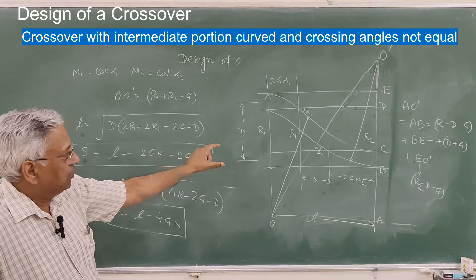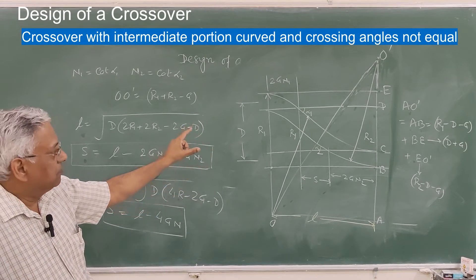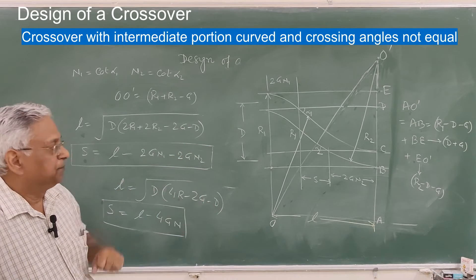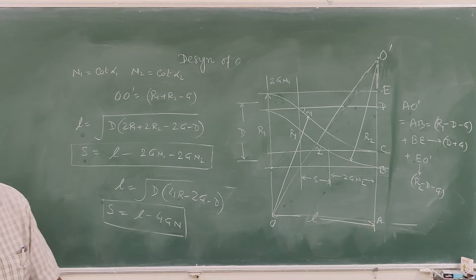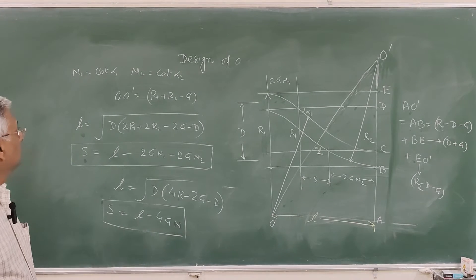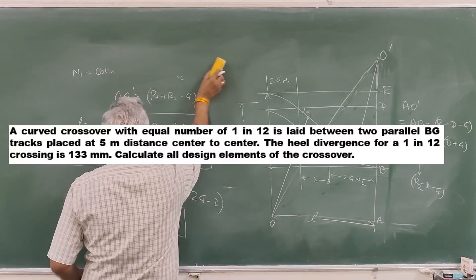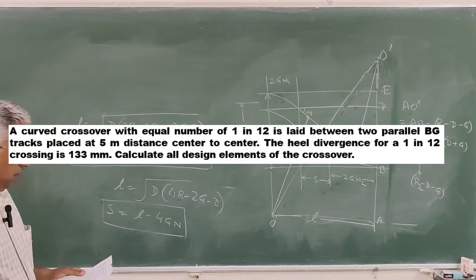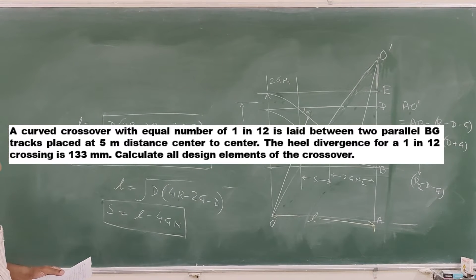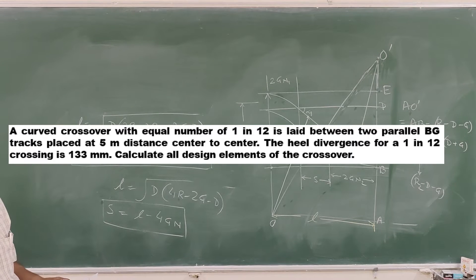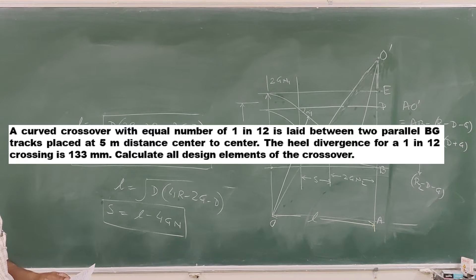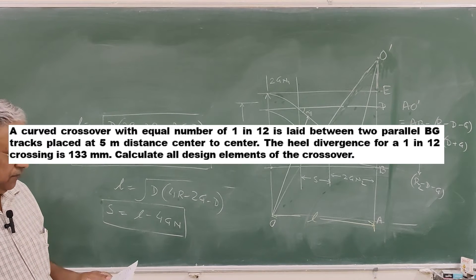That is how you design a crossover between two parallel tracks — the intermediate position may be straight, or curved with the same crossing angle, or curved with different crossing angles. To illustrate further, consider this example: a curved crossover with equal crossings of 1 in 12 is laid between two broad gauge parallel tracks placed at 5 meters center to center. The heel divergence for a 1 in 12 crossing is 133 millimeters. Calculate all design elements of the crossover.